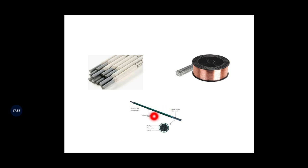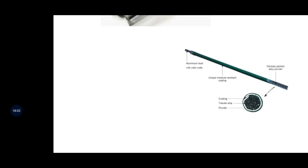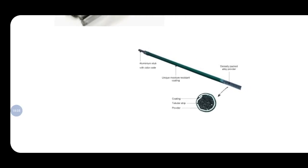Tubular electrodes are hollow materials containing flux inside, used in the flux-cored arc welding process. They consist of a wire made of low-carbon steel sheath surrounding a core of flux and alloying materials. The compounds contained in the wire perform the same functions as coated electrodes.